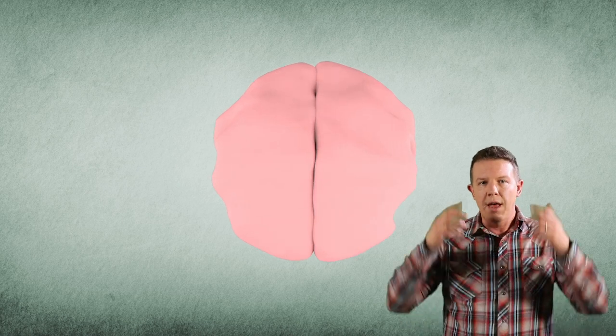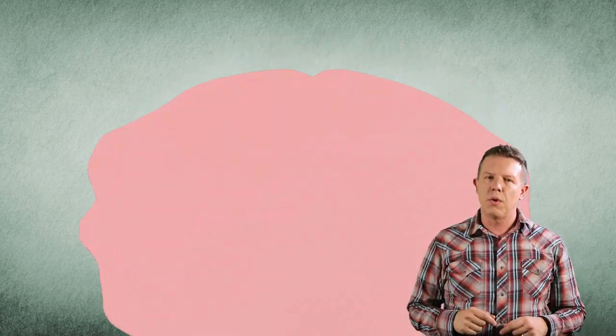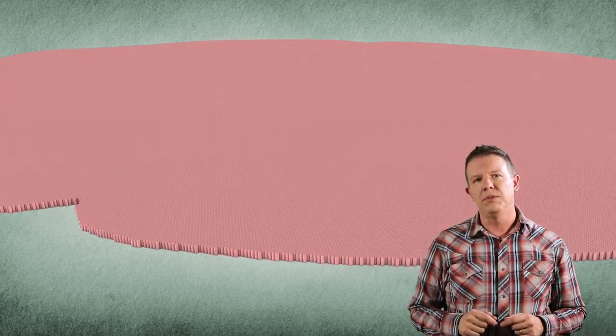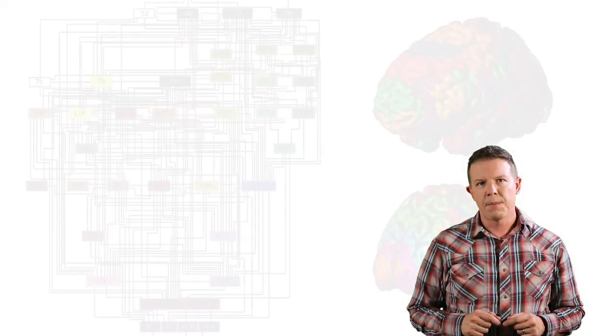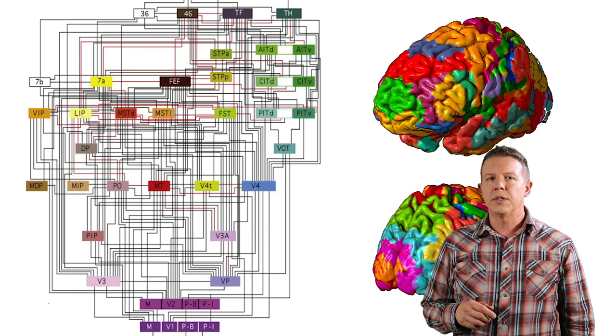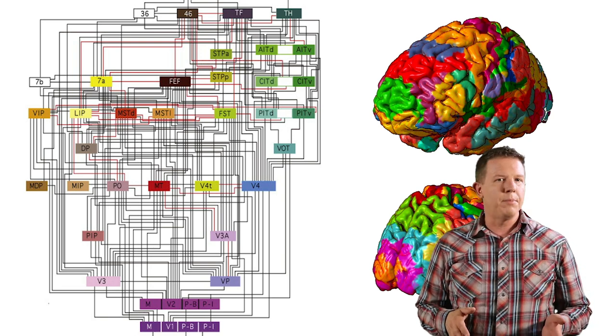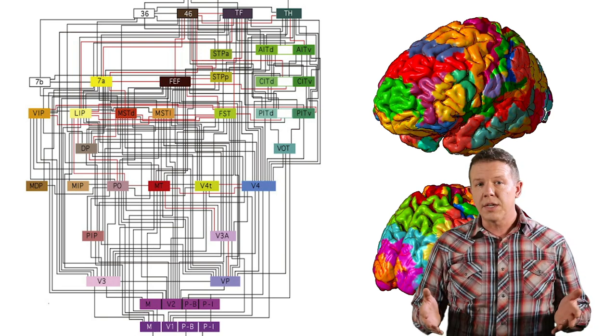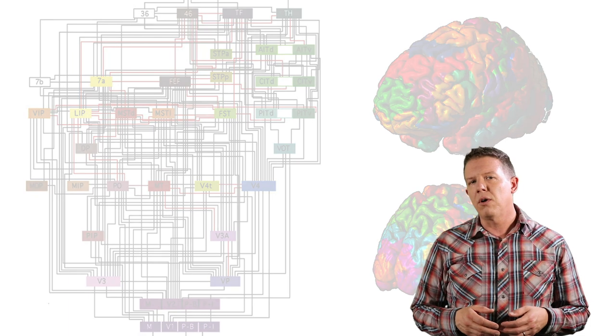Remember that the thousand brains theory of intelligence says that every part of the neocortex is running the same essential computation. These regions of neocortex all contain thousands of copies of this unit and are connected together in a messy and loosely hierarchical way.